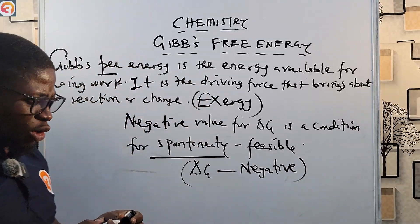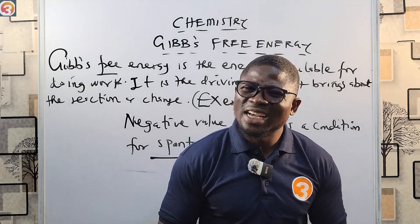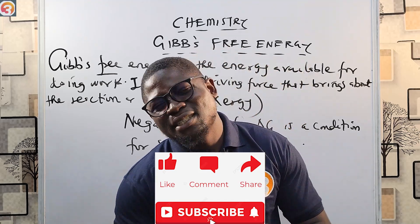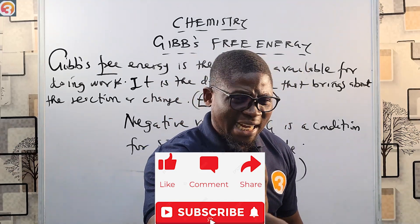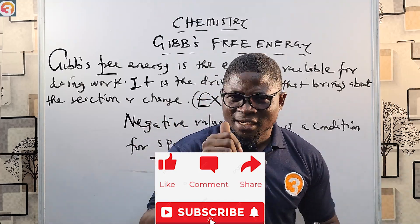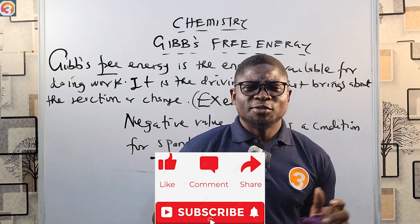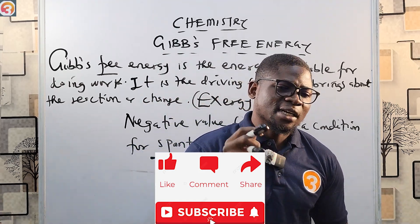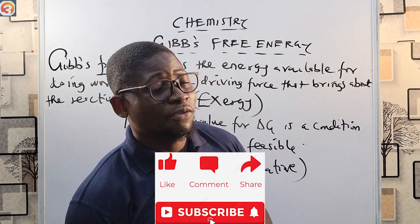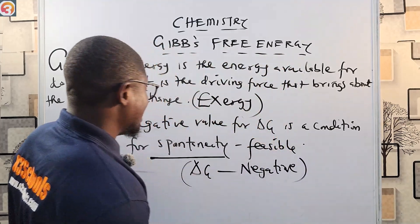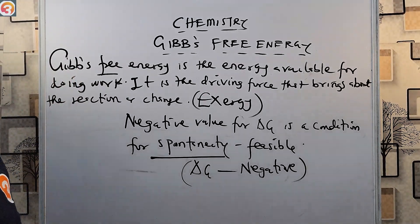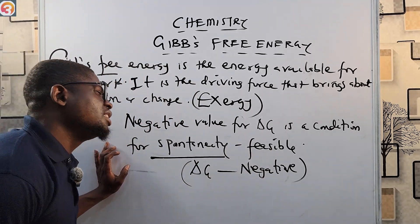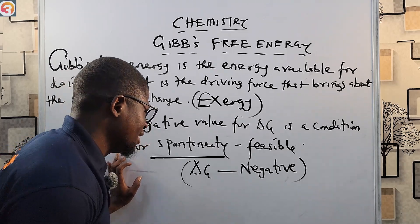ΔG must be negative for a reaction to be feasible and spontaneous. Please also like this video and subscribe — subscription is free and just notifies you when a new video is published. Now, to recap: a negative value for ΔG is a condition for spontaneity, meaning the reaction is feasible.